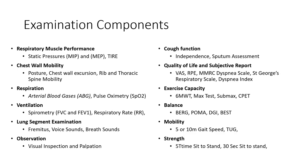When we start examining the pulmonary system, there are several different components we can assess. We can look at respiratory muscle performance — we'll cover that in a later lecture, as it's more relevant for patients going into pulmonary rehab. Chest wall mobility, respiration, ventilation, lung segment auscultation — what's normal and what's abnormal. Visual observation can give us so much information just from looking at how our patients are presenting. Cough function is critically important, and we'll cover that more in our airway clearance lecture. Quality of life and subjective reports, we'll go over some of that.